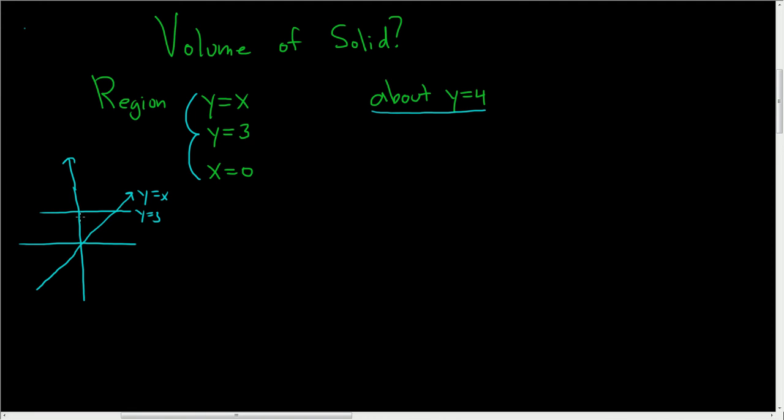And x equals 0 is this vertical line right here, it's the y-axis. So we care about this piece here, and we're spinning it about y equals 4, so about this dotted line up here.